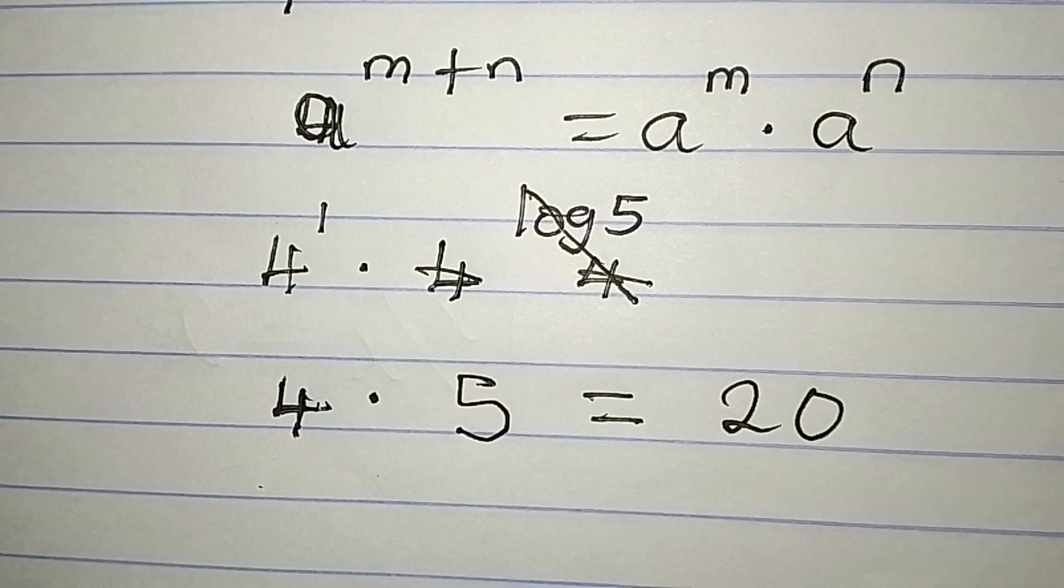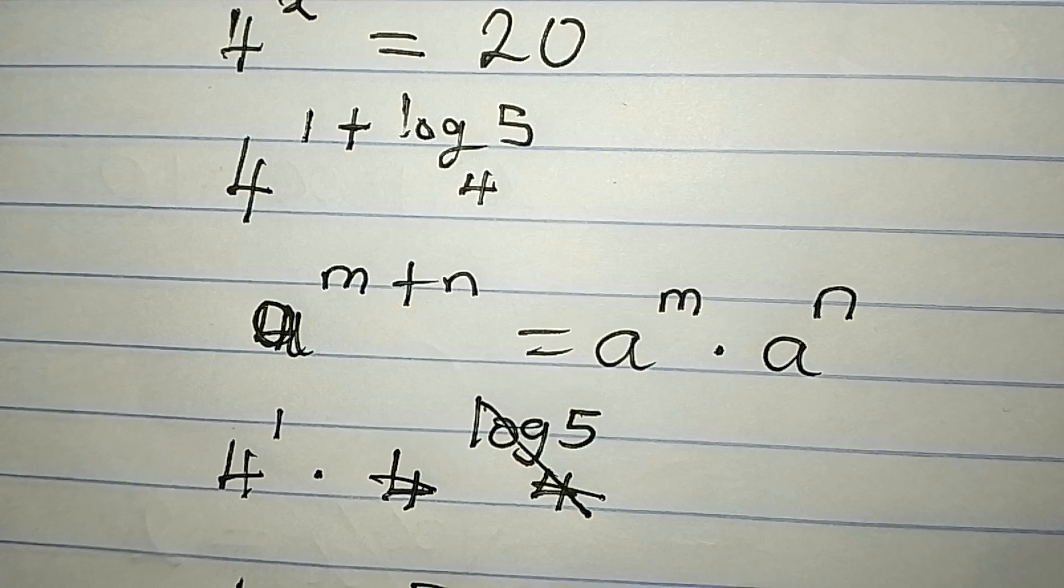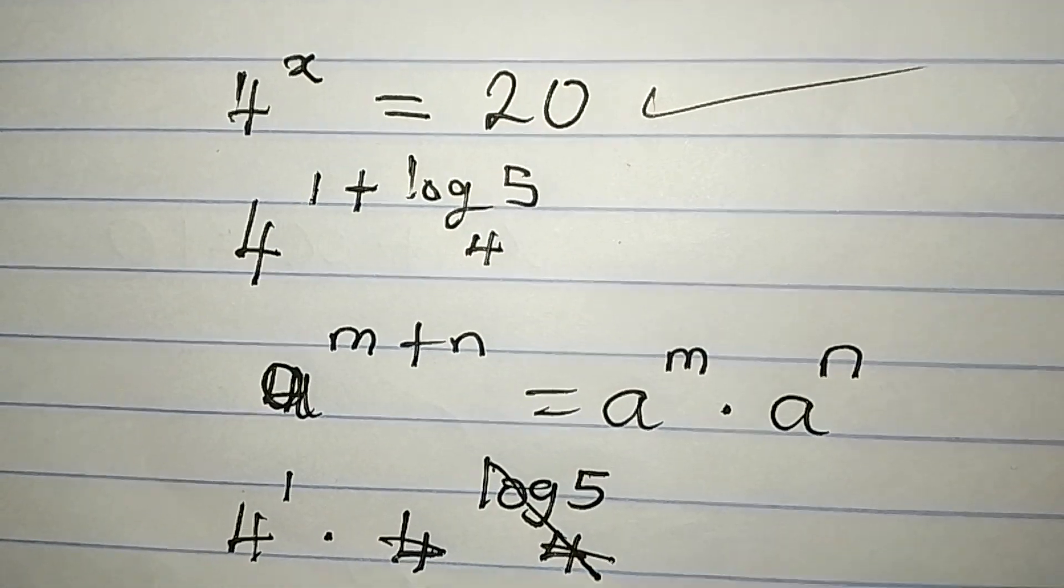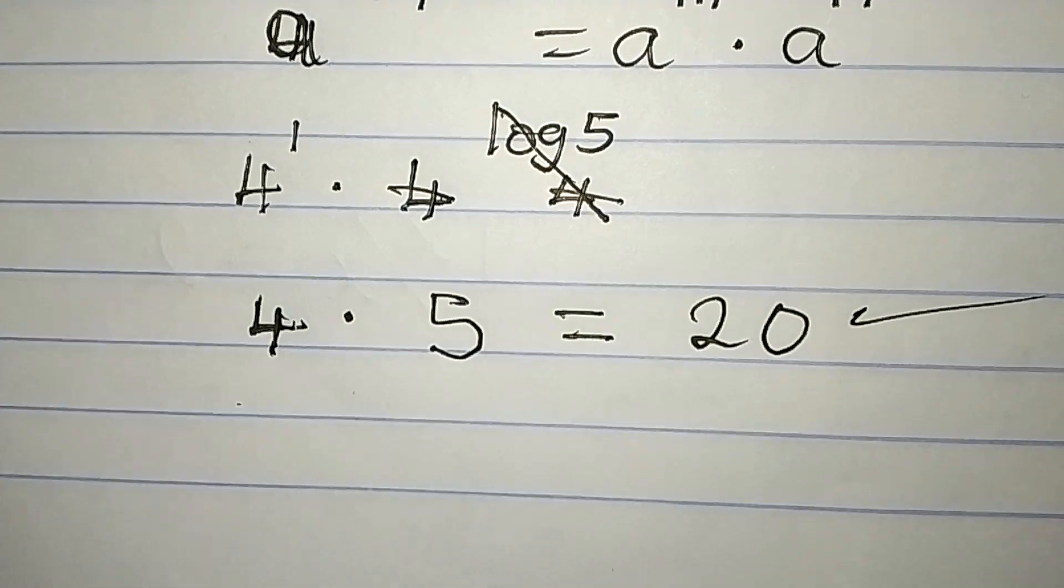So 20 becomes the answer. And that is what we had on the right-hand side of the equation. We have our 20 and we are having 20 down here. But then, let me explain this better.